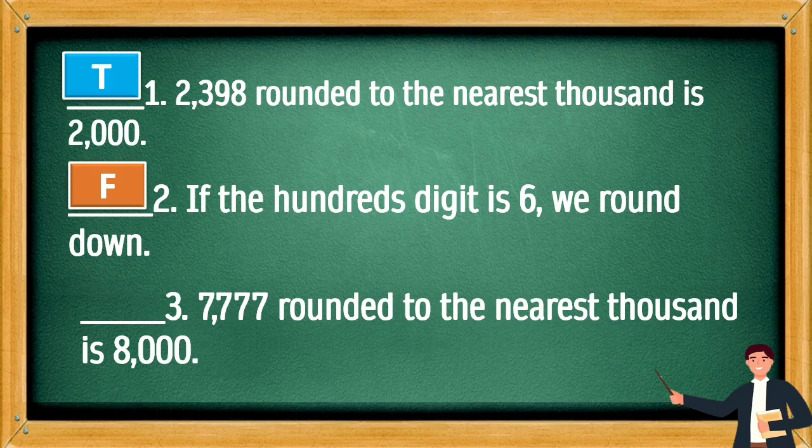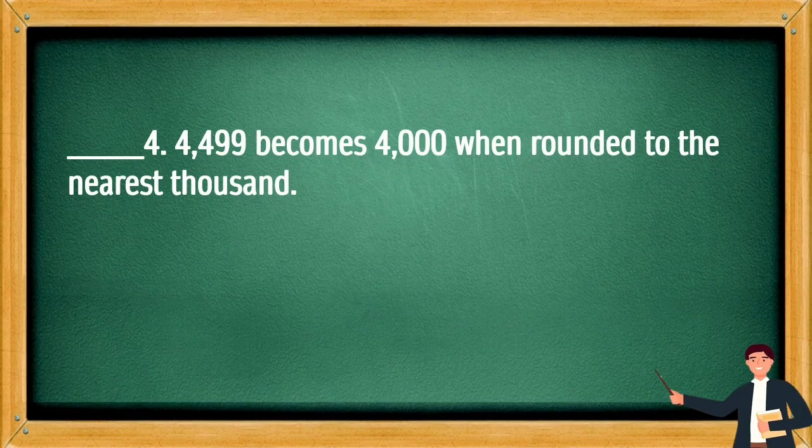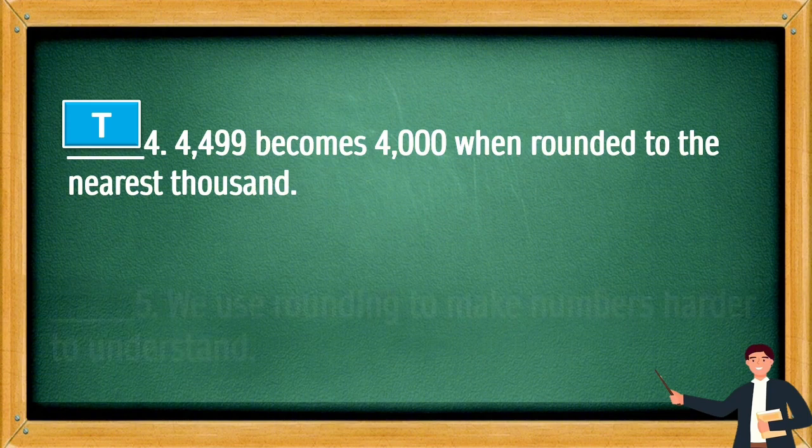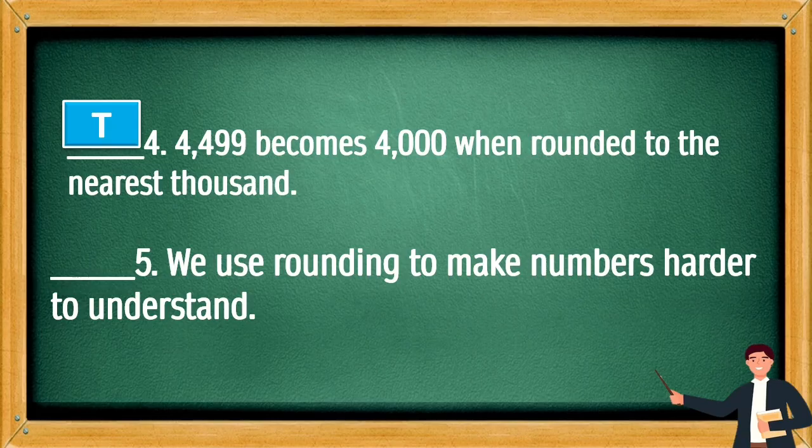7,777 rounded to the nearest thousand is 8,000. This is T. 4,499 becomes 4,000 when rounded to the nearest thousand. This is T. We use rounding to make numbers harder to understand. This is F.